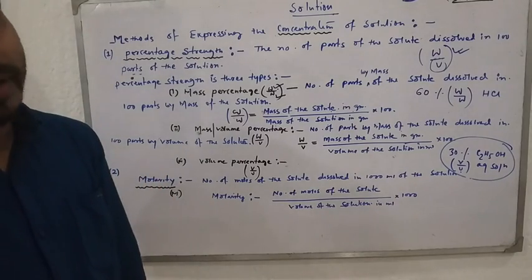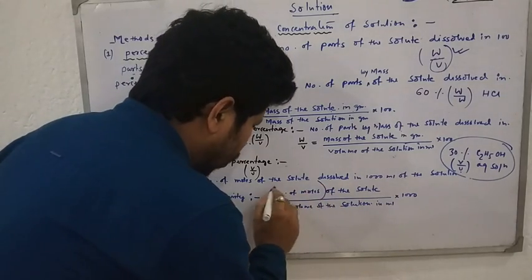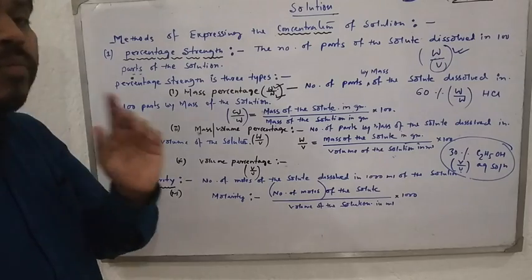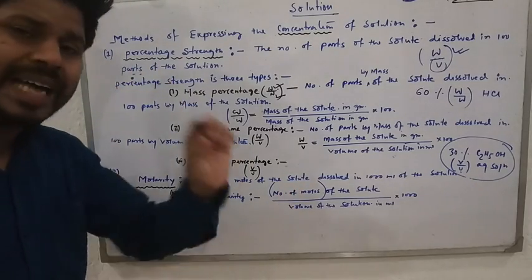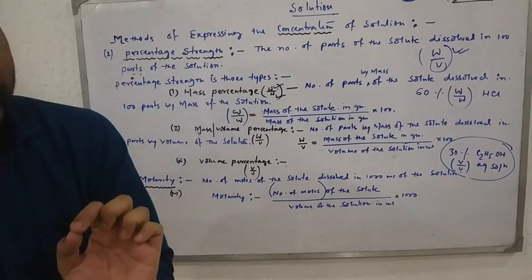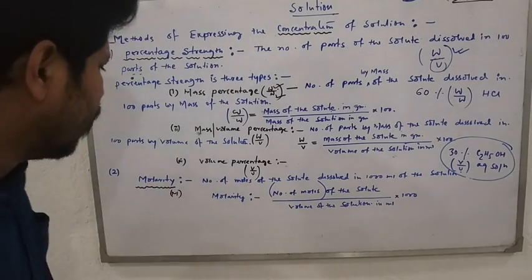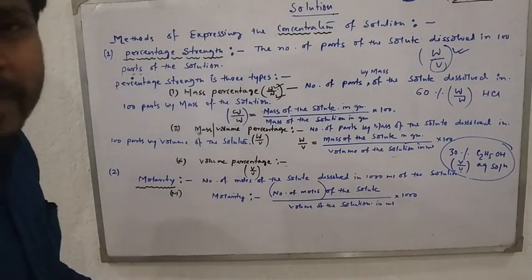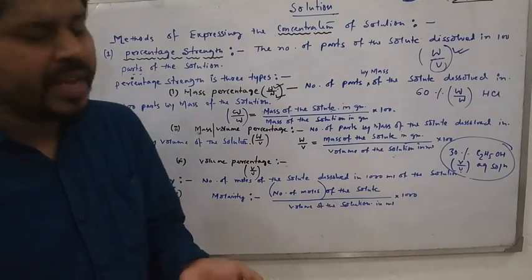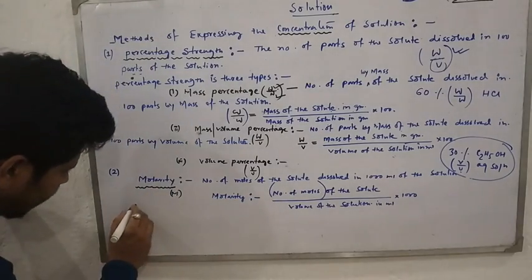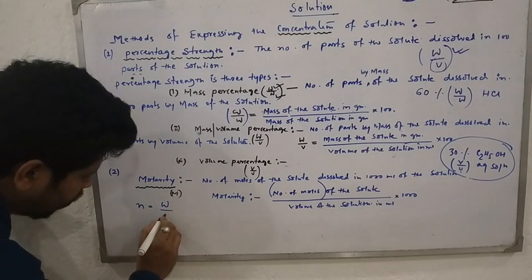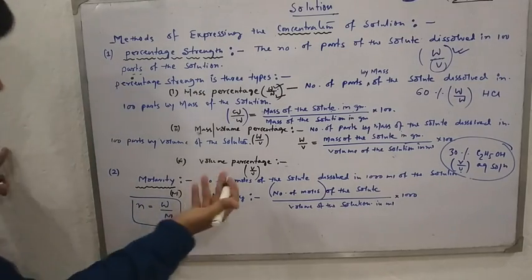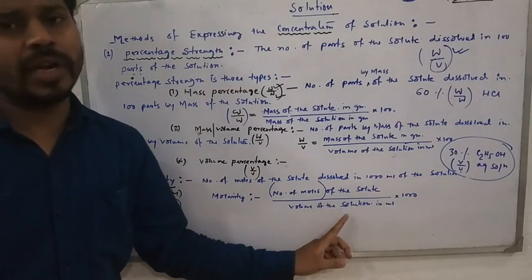One more important thing: how to find out the number of moles? In a numerical problem, the mass of the solute is given rather than the number of moles directly. So you use the formula: number of moles = given mass divided by molar mass. Just use this formula and you will get the number of moles of the solute.